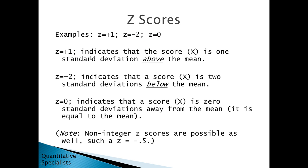A z of positive 1 indicates that the score x is one standard deviation above the mean — above the mean because it's positive, and one standard deviation because z equals 1. A z of negative 2 indicates a score is two standard deviations below the mean. A z of 0 indicates a score is zero standard deviations away from the mean, meaning it equals the mean.